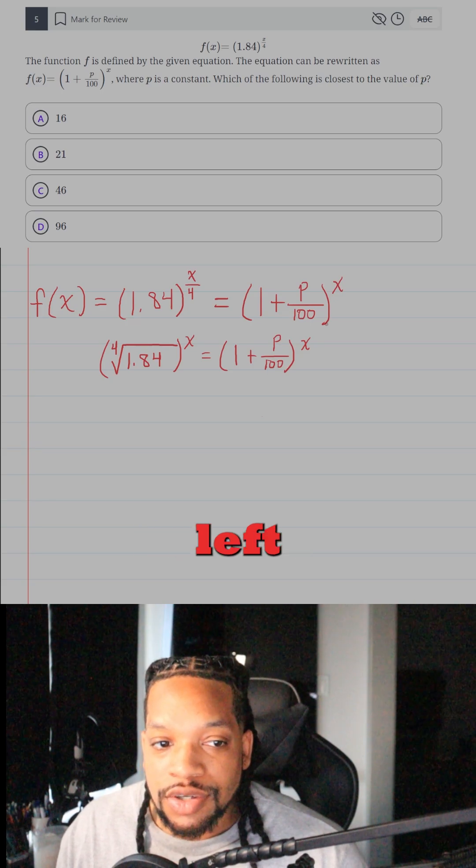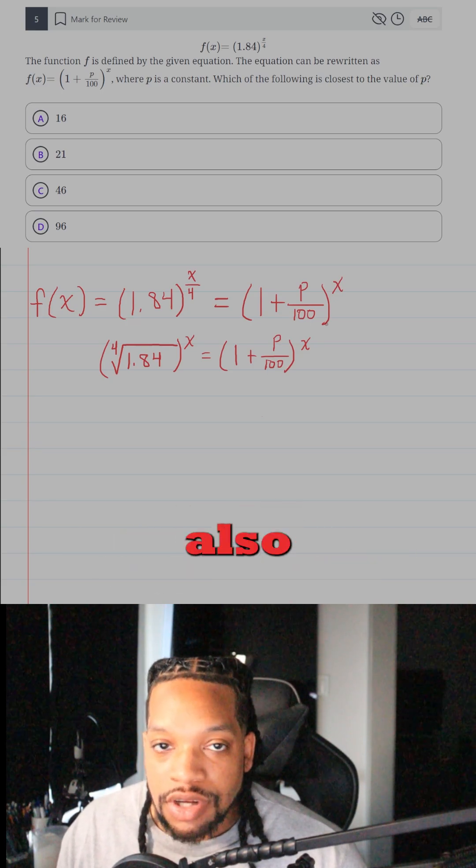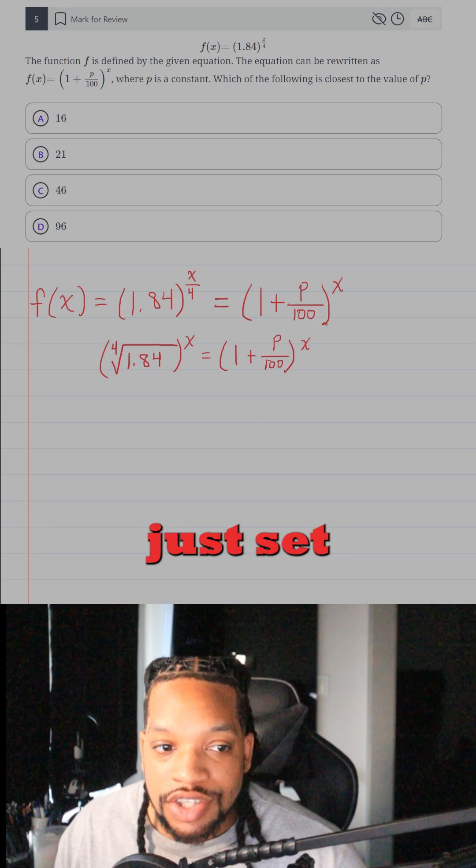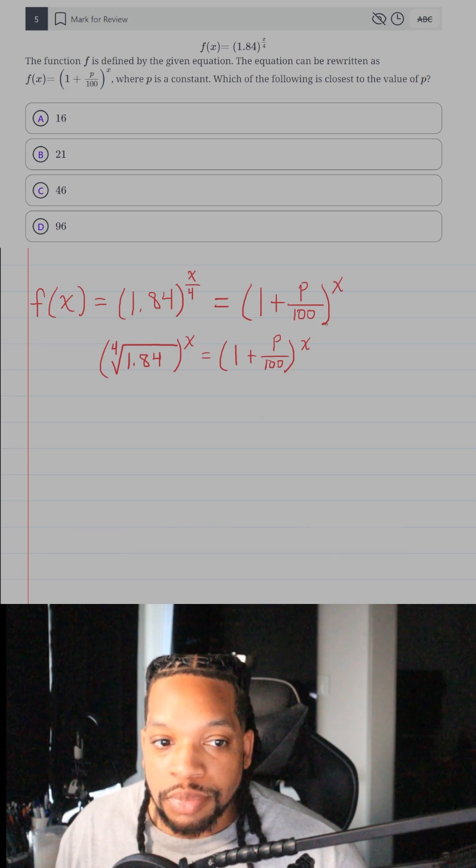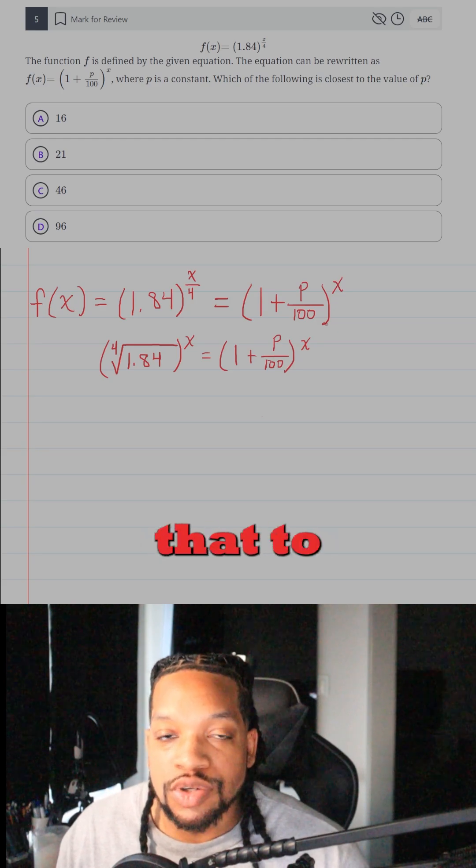So since those left sides and right sides are equal to each other, then their arguments also have to be the same. So I can just set that 4th root of 1.84 equal to 1 plus P over 100, and then I can use that to solve for P.